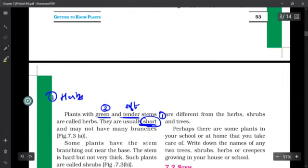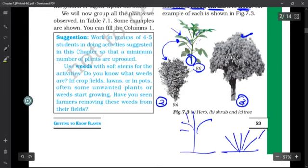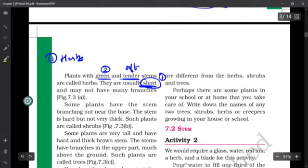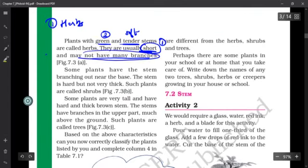Second point: they have green and tender stems, meaning their color is green and tender means they are soft. Third point: they may not have many branches, or you can write they do not have branches near the base. You can see in this diagram - the branches are coming up higher, not near the soil.